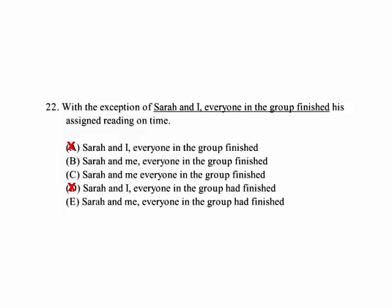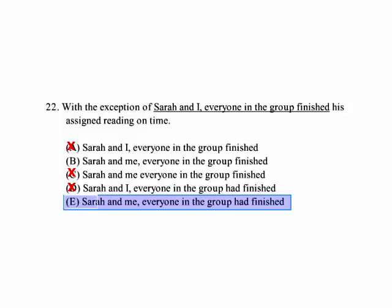Looking at the answer choices, we can eliminate A and D because they still have 'Sarah and I.' C correctly has 'Sarah and me,' but we need a comma to separate the prepositional phrase 'with the exception of Sarah and me' from the rest of the sentence. Now looking at B and E, E is the correct form because we're talking about something that had happened previously — therefore, 'they had finished the assigned reading on time.'